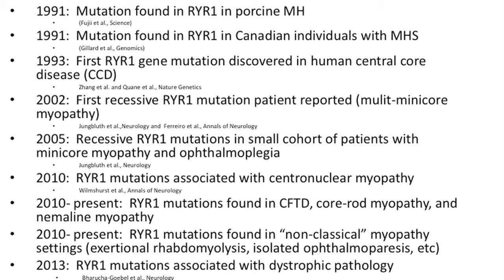It was almost 10 years later that recessive mutations in RYR1 were first discovered, initially with a case report of multi-mini-core myopathy caused by recessive RYR1 mutation, and then the observation that individuals with a subset of mini-core myopathy causing weakness and eye movement paralysis essentially all had RYR1 mutations. Starting in 2010, coinciding largely with the explosion in genetic and genomic technology, RYR1 mutations were found in centronuclear myopathy, and then in essentially all different histopathologic subtypes of congenital myopathy — core rod myopathy, nemaline myopathy, and congenital fiber type disproportion — and even muscular dystrophy. We've gone from malignant hyperthermia and central core disease to this very broad group of conditions associated with RYR1.